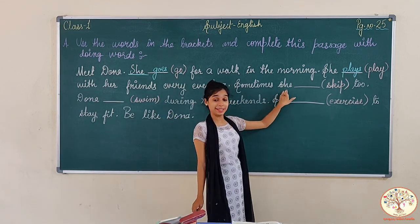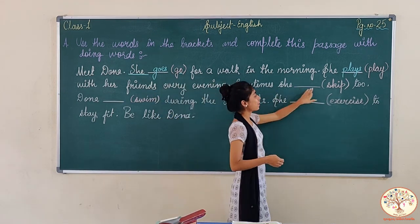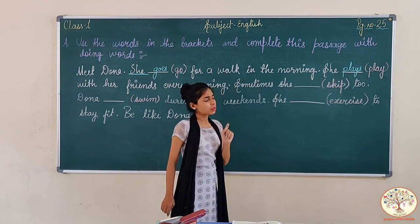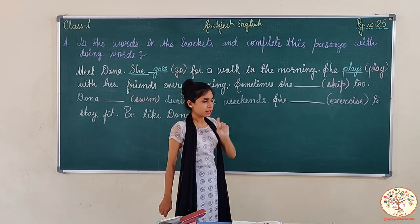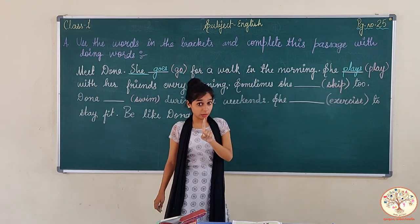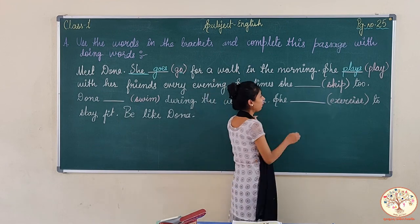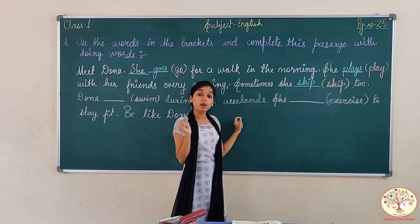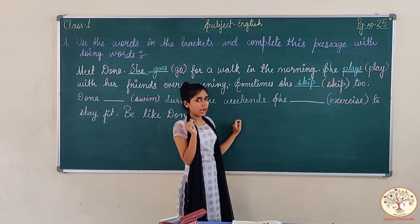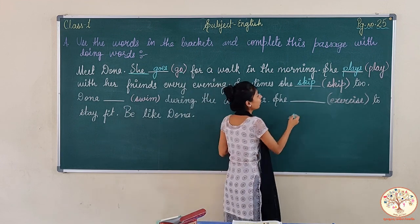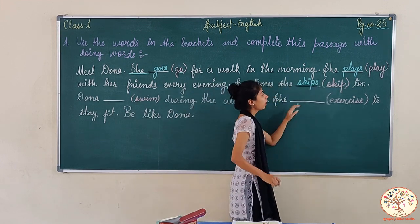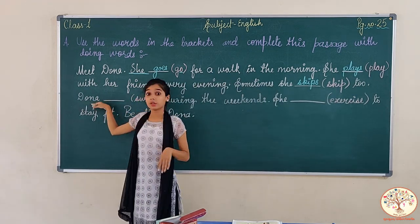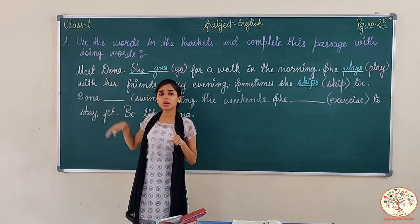Sometimes she — again 'she'. So what is given in the bracket? Skip. Skip is a doing word, and she is a single girl. So 'skip' will be in its plural form. How do we make 'skip' plural? We will add S. So it becomes 'skips'. Dona — Dona means one girl, the name of the girl — that means one.